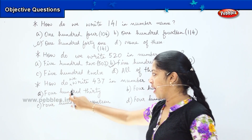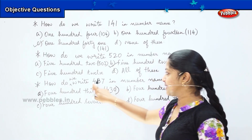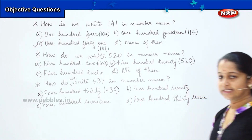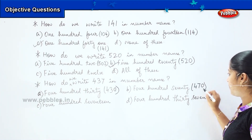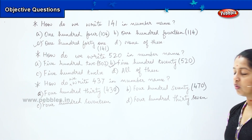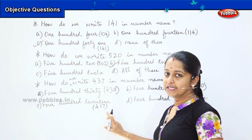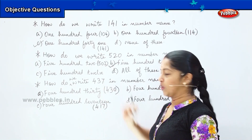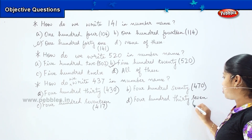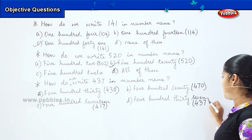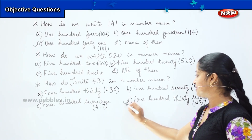Option A, four hundred thirty, would be written as 4, 3, 0 — that does not match. Option B, four hundred seventy, is written as 4, 7, 0 — no match. Option C, four hundred seventeen, is 4, 1, 7 — also no match. Option D, four hundred thirty-seven, is written as 4, 3, 7 — this matches the question! So my right answer is option D.